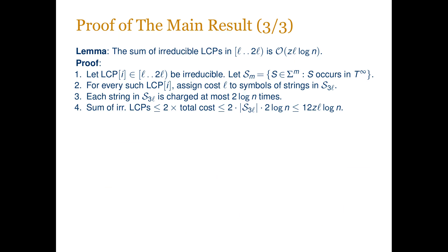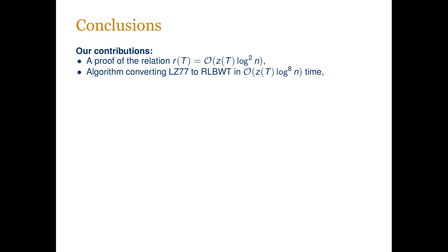We have therefore proved that each string in S_{3l} can be charged at most 2·log(n) times. Since all LCP values considered lie between l and 2l and each contributes a cost of l, the total sum of all considered LCPs is at most twice the total charged cost. That quantity is bounded by |S_{3l}| · 2·log(n). Recalling that the number of distinct substrings of length m is at most m · z, and applying this to S_{3l}, we obtain the final upper bound. This concludes the proof.